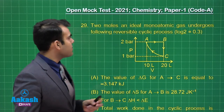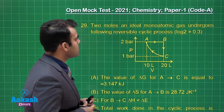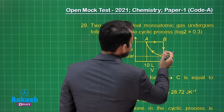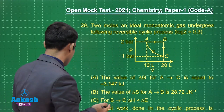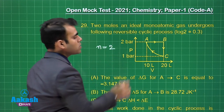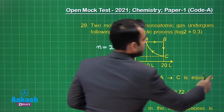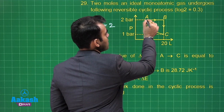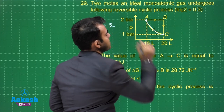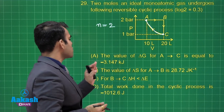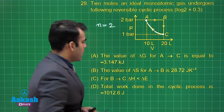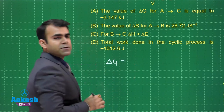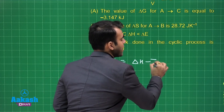In this question, two moles of an ideal monatomic gas undergoes the following reversible cyclic process. We have a state change from A to B, then B to C, and finally C to A, all reversible. N equals 2. We're asked for the value of ΔG for A to C. The given value is −3.147 kJ. Delta G is Gibbs free energy change, given by ΔG = ΔH − TΔS.